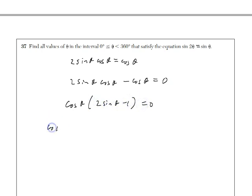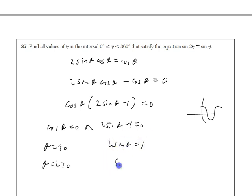And we have two possibilities. Either cosine theta equals 0. Here's a cosine curve. It equals 0 at 90 and at 270. The other piece is that 2 sine theta minus 1 equals 0. 2 sine theta equals 1. Sine theta equals 1 half.